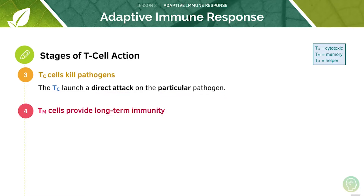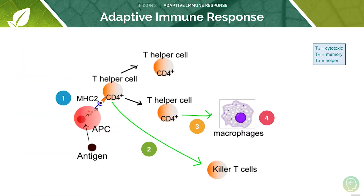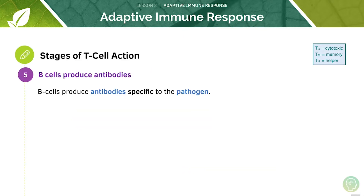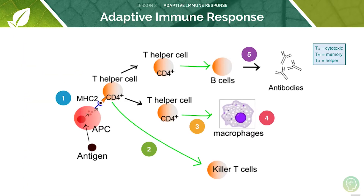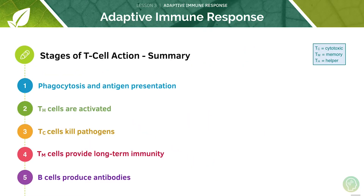We'll learn about memory cells later on. B cells will produce antibodies specific to the pathogen. Here's a quick summary of all the stages of T cell action.